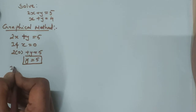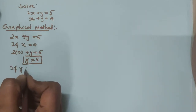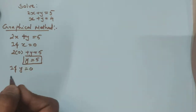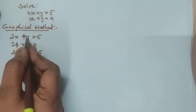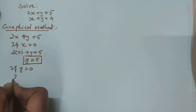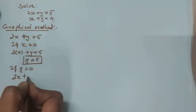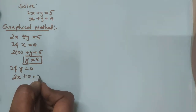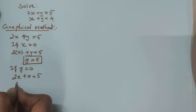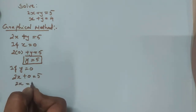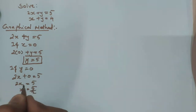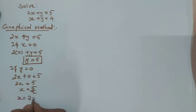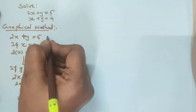Then if y is equal to 0, consider that y is equal to 0. Just substitute y as 0 in this equation. You will get 2x plus 0 is equal to 5, so 2x is equal to 5, so x is equal to 5 by 2. 5 by 2 is nothing but 2.5. Is it clear?